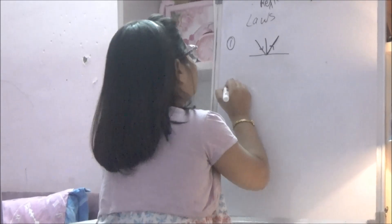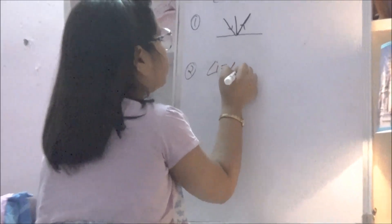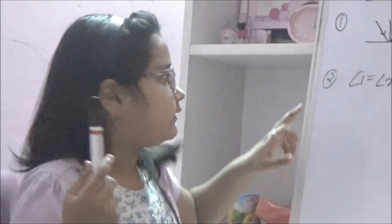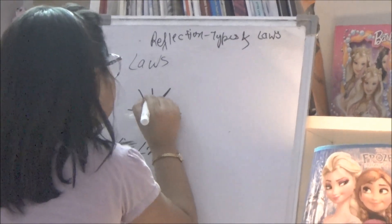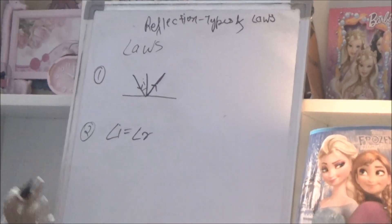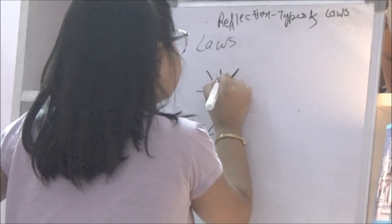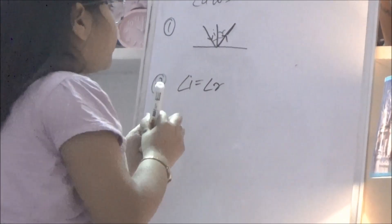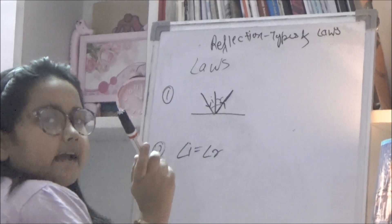Second law: the angle of incidence is equal to the angle of reflection. The angle of incidence is the angle made by the incident ray and the normal. The angle of reflection is the angle made by the reflected ray and the normal. So according to this law, these two angles are equal.